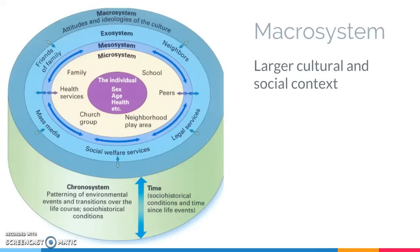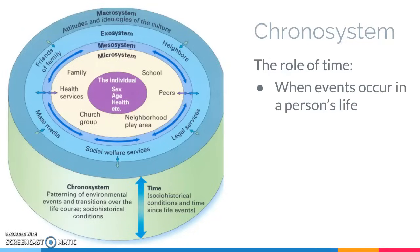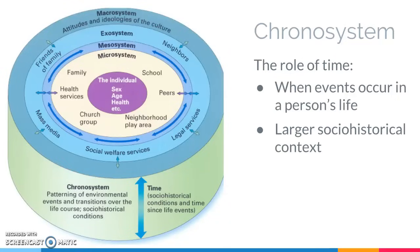And then finally, just to make this whole thing more complicated, we have the chronosystem, which in this graphic is kind of the 3D element of this image. The chronosystem has to do with the role of time. Part of this relates to when events occur in a person's life — for example, we can talk about how people are typically affected by becoming parents, but the effects are very different if someone becomes a parent for the first time at age 16, 26, or 36. The other element of the chronosystem is the larger historical context. So somebody who is in their 40s today might have different views about money and different spending habits compared to what today's 20-year-olds will do when they are in their 40s — that's going to be because of changes in the general cost of living, expectations of what it will cost to save for retirement, etc.